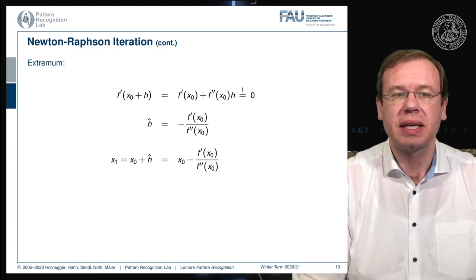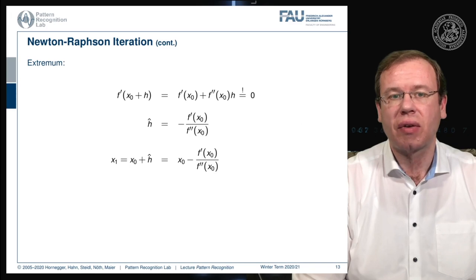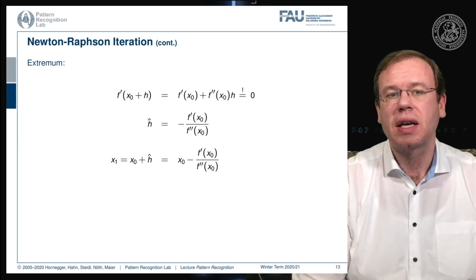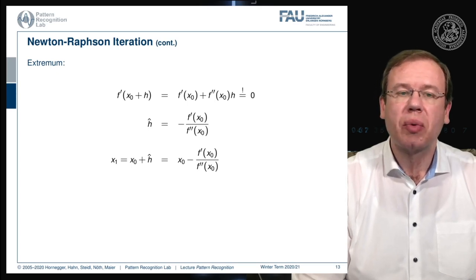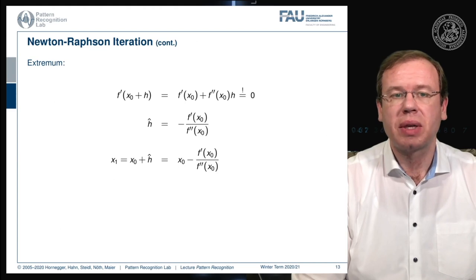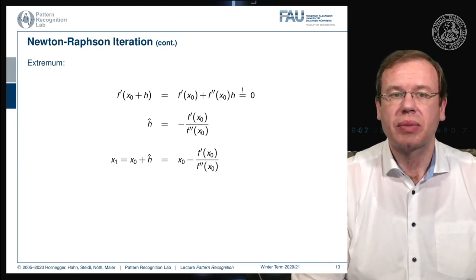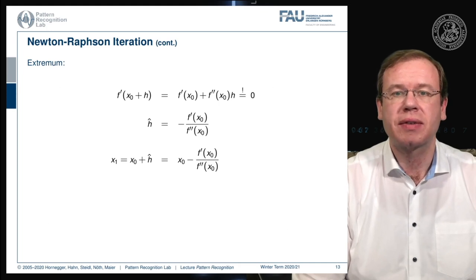We can reuse h-hat and find our x1 — our updated scheme — which is simply x0 plus h-hat. This can be written out as x0 minus the first derivative of the function at x0 divided by the second order derivative of the function at x0. In matrix notation, the right-hand term can be rewritten as the Hessian inverse times the gradient of the function. And so this is exactly our Newton-Raphson iteration.